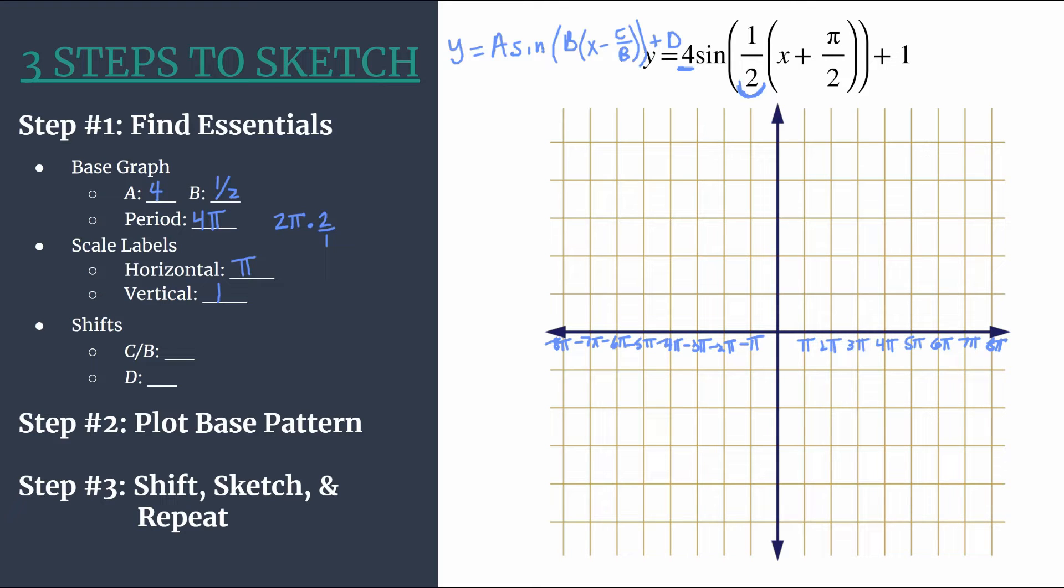So we have our horizontal axis labeled. One quick note on that, for the base pattern in the next step, you'll notice that this fourth horizontal tick mark to the right of the origin matches the period. And with this setup, with this method of choosing our horizontal scale labels, taking the period and dividing by 4, it should make sense that that should always match. But it's a nice thing to double check.